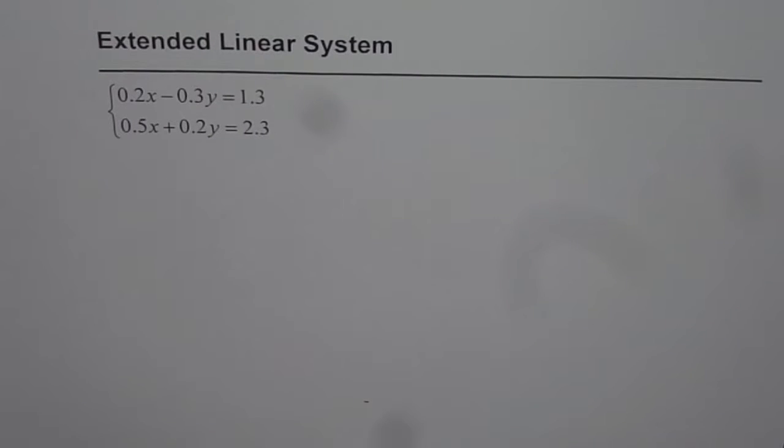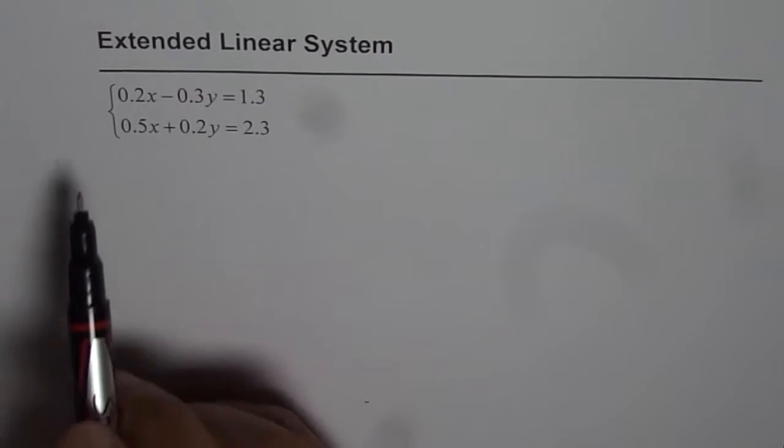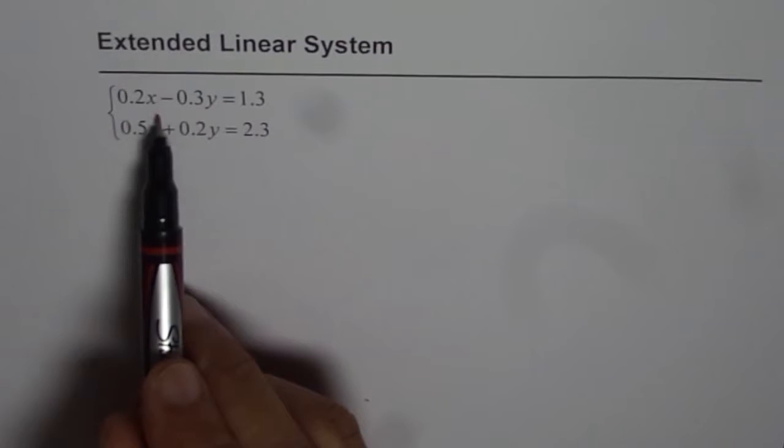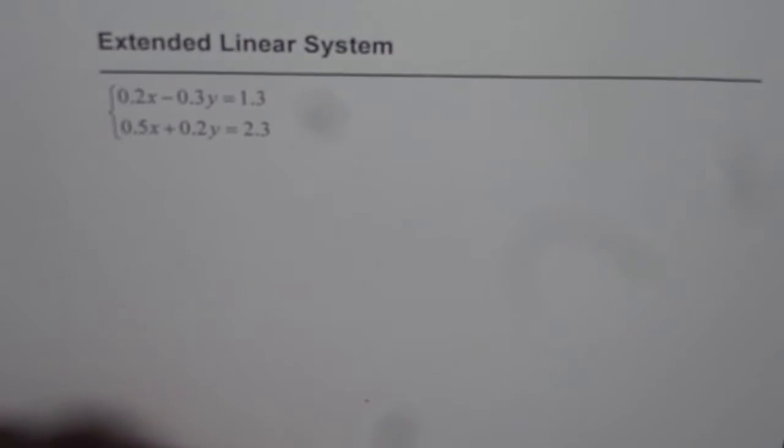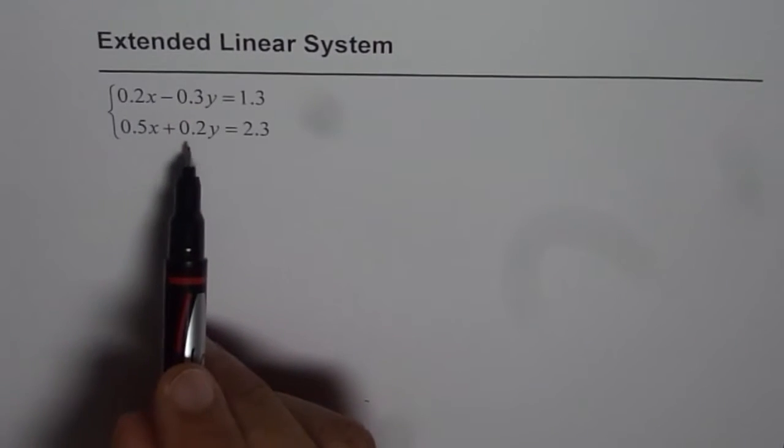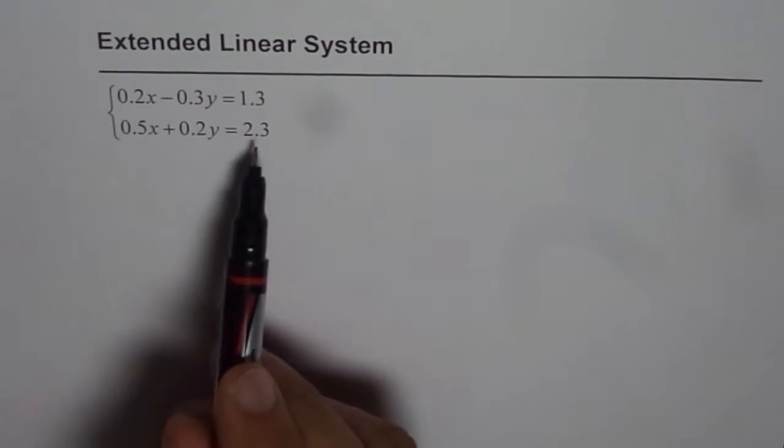I am Anil Kumar and here is a linear system which has equations with decimal numbers. Our equations are 0.2x minus 0.3y equals to 1.3, and 0.5x plus 0.2y equals to 2.3.